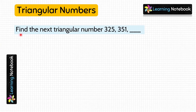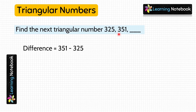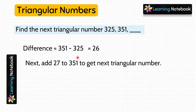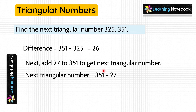Let's do one more such question. Find the next triangular number after 325 and 351. First, find the difference: 351 − 325 = 26. Next, add 1 to this difference: 26 + 1 = 27. Then add this 27 to 351: 351 + 27 = 378. So 378 is the next triangular number.